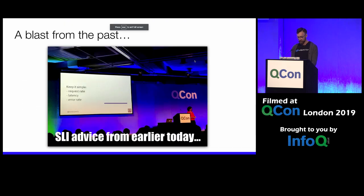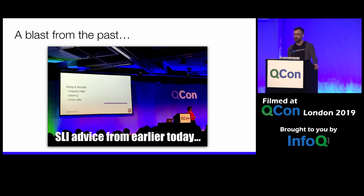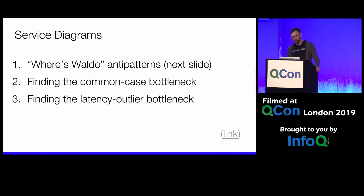I took a picture this morning from the keynote — she made a great point about keeping it simple for SLIs. You really don't need more than latency, error rate, and throughput for SLIs. Now let's talk about service diagrams. I'll start with some anti-patterns in this area, then we'll talk about finding bottlenecks in common cases and in outlier cases.